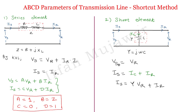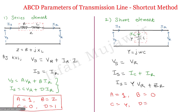Comparing with the standard equations, the ABCD parameters of the shunt element are: A equals 1 (coefficient of Vr in Vs), B equals 0 (no Ir term in Vs), C equals Y (coefficient of Vr in Is), and D equals 1.